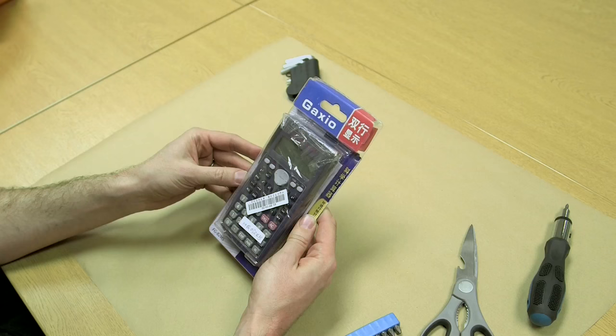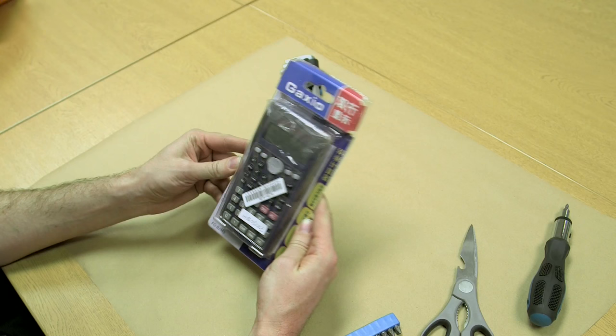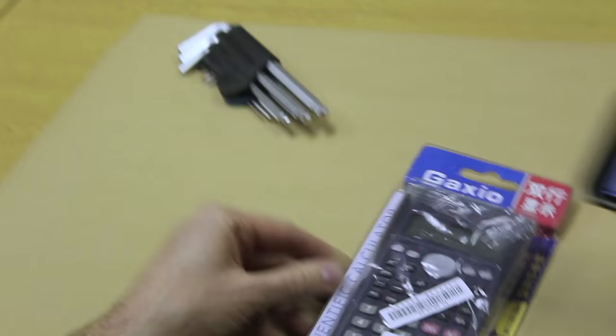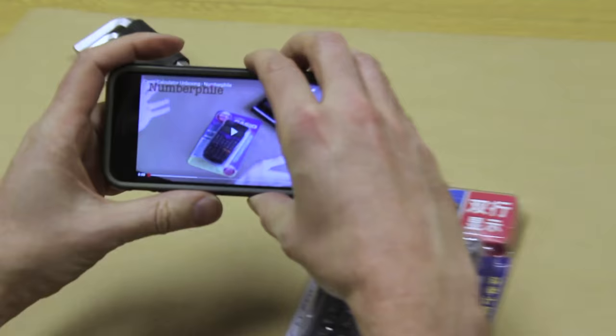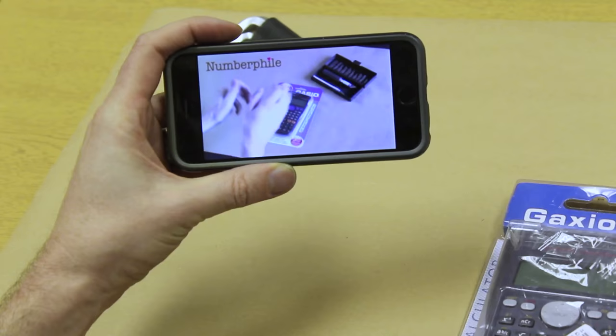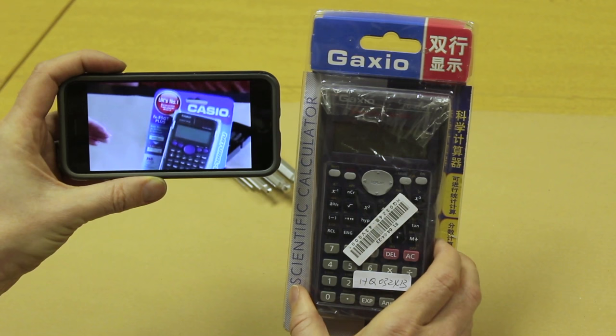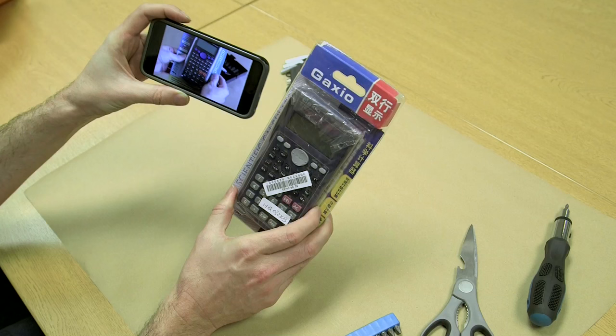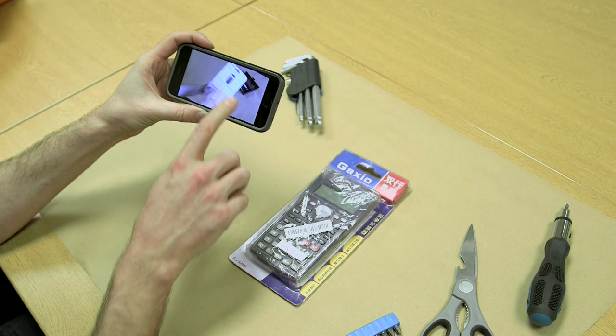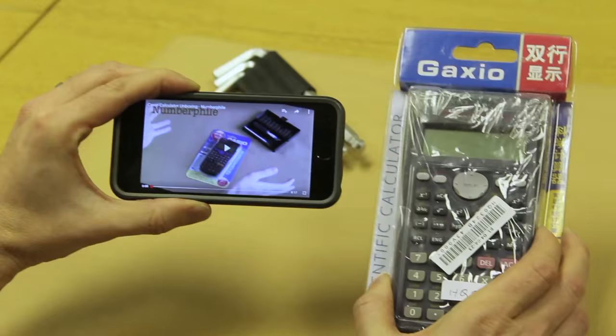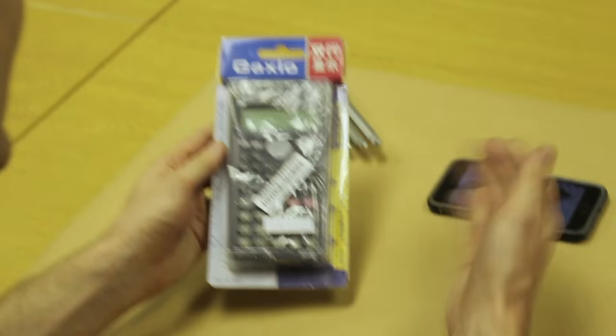Some of you may think the Gaxio is a little bit familiar. It looks vaguely like something you've seen before. Well, I have here our previous review we did of a Casio, a member of the FX series, and you can see the surprising similarities. Look at that, they're pretty much the same calculator, just in different packaging. You're now watching an unboxing video.